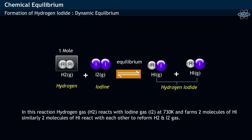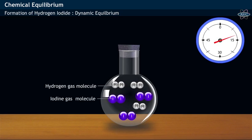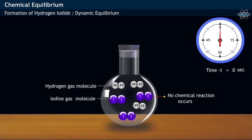Hydrogen gas reacts with Iodine gas at 730 Kelvin and thereby forms two molecules of Hydrogen Iodide. At the beginning of the reaction, when time equals 0 seconds, no chemical reaction occurs.